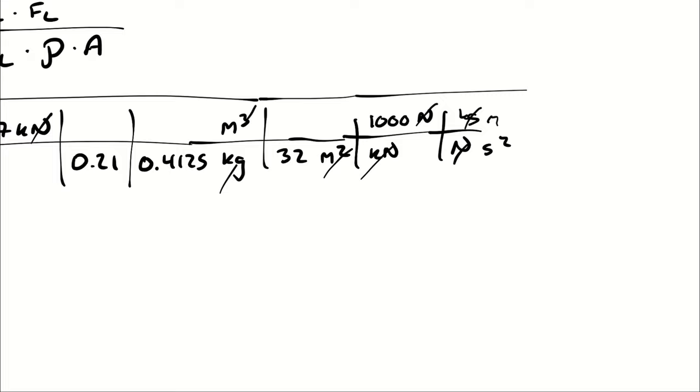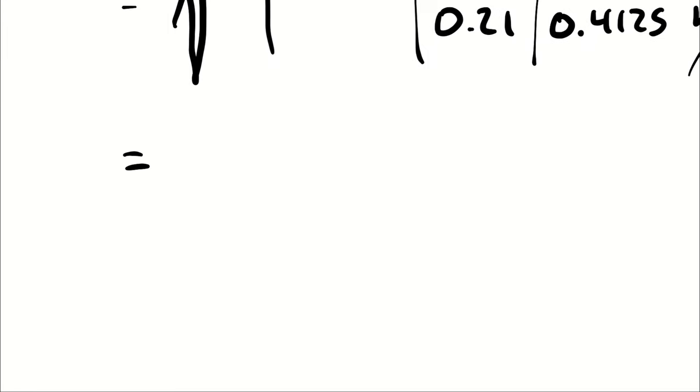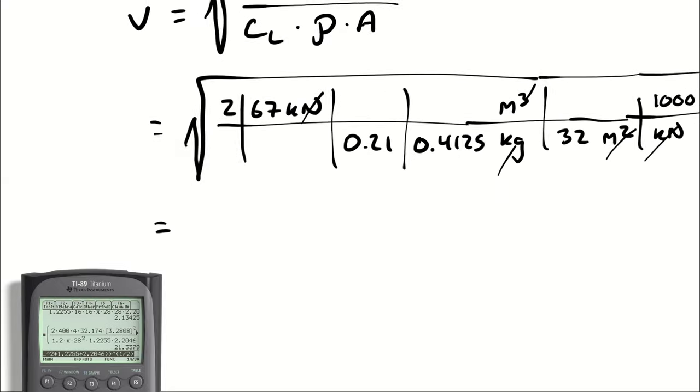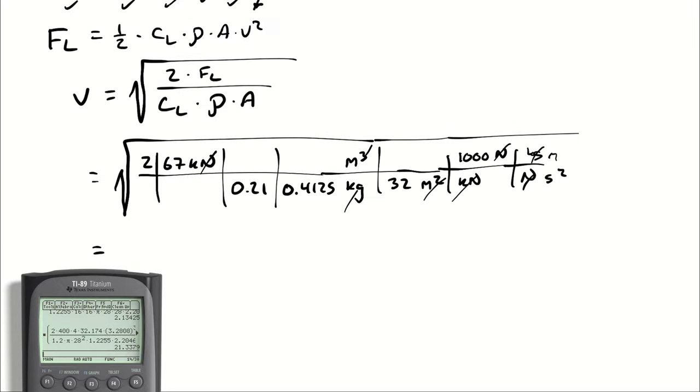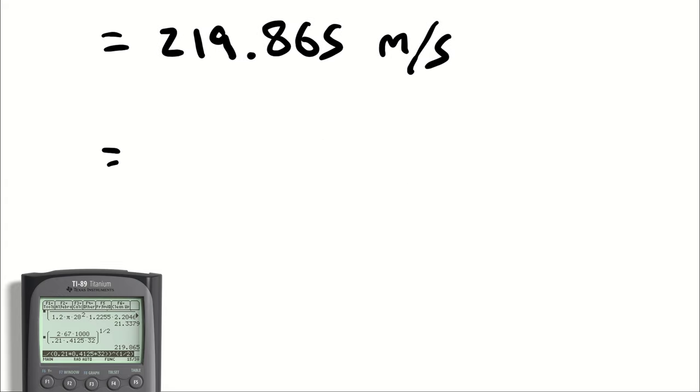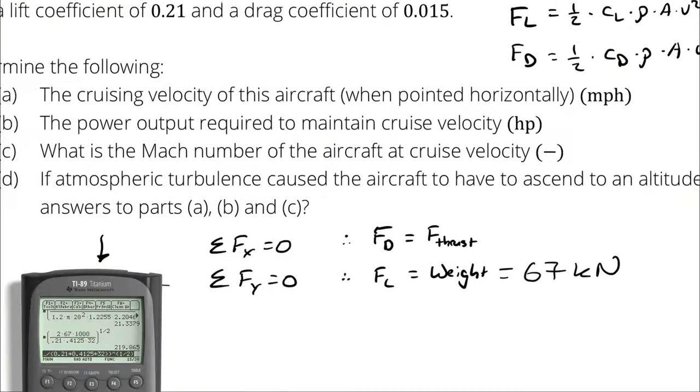Since we're probably going to use this velocity in other parts of the calculation, let's leave it in meters per second and then convert to what the answer is asked to be in. We start with 2 times 67 times 1000 divided by 0.21 times 0.4125 times 32, which when taken to the square root gives me a velocity of 219 meters per second. That's useful for other parts of the calculations, but the problem actually asked for an answer in miles per hour.